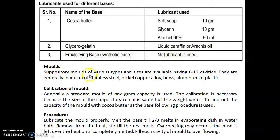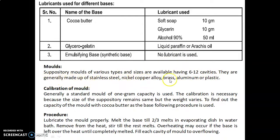Suppository molds of various types and sizes are available having 6 to 12 cavities. They are generally made up of stainless steel, nickel, copper, alloy, brass, aluminium, or plastic.